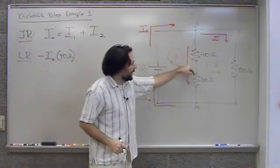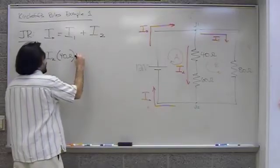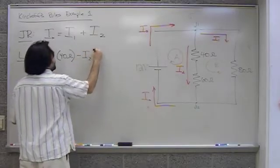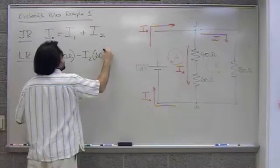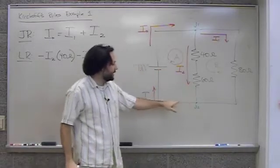That's the voltage drop across the resistor. I continue down. I get to the 60 ohm resistor. I'm following the current so it is another voltage drop. Again, I'm going to use Ohm's law to describe it. 60 ohms. I get to the bottom here. I come this way.